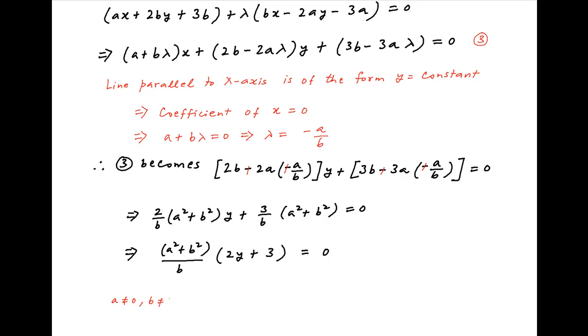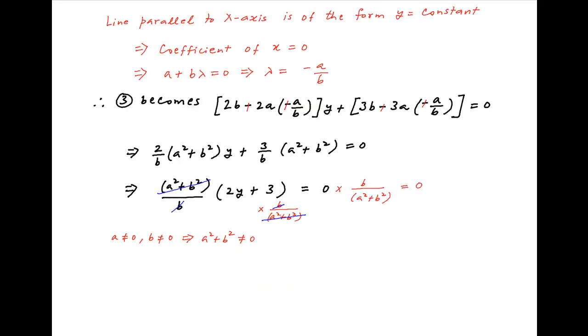Now, we are given that both a and b are not equal to 0. Therefore, we can multiply both sides of the above equation by b divided by a square plus b square. The right hand side is equal to 0 and the left hand side simplifies to 2y plus 3. Therefore, the desired equation of the line passing through the intersection of the given lines is given by 2y plus 3 is equal to 0 or y is equal to minus 3 upon 2, which is the required answer.